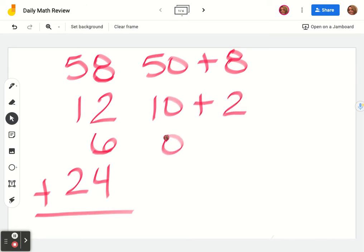Six is a one-digit number, so we have no tens. And then our last number, 20 plus four.